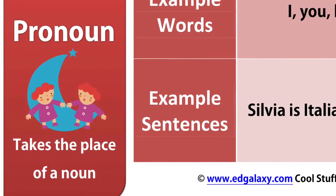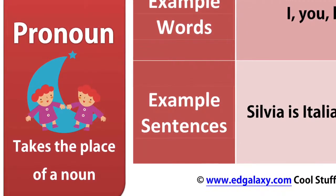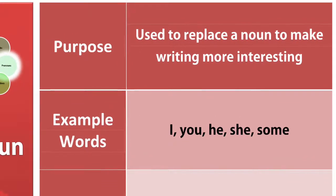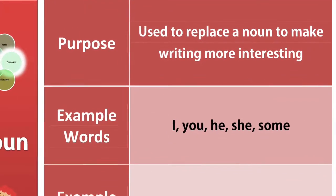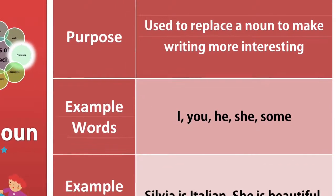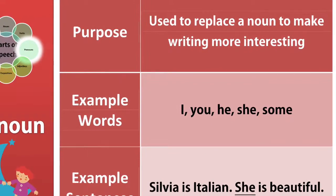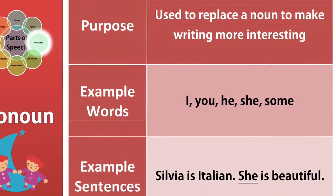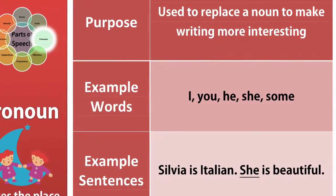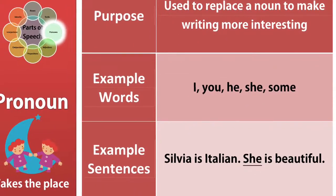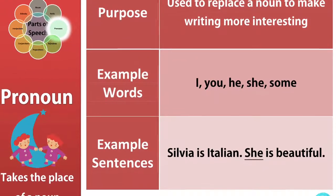A pronoun. A pronoun takes the place of a noun. Its purpose is used to replace a noun to make writing sound more interesting. Example words: I, you, he, she, some. Example sentences: Sylvia is Italian. She is beautiful. So she is replacing Sylvia, the noun.